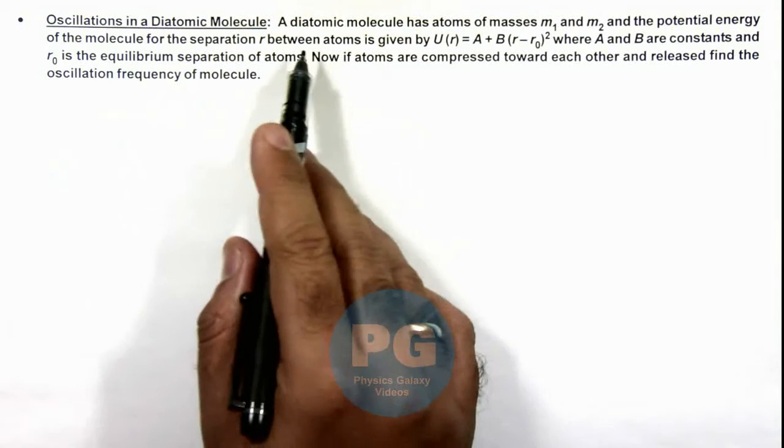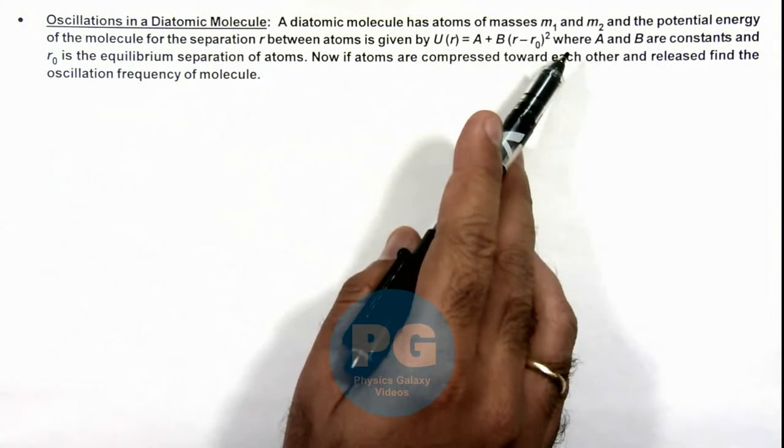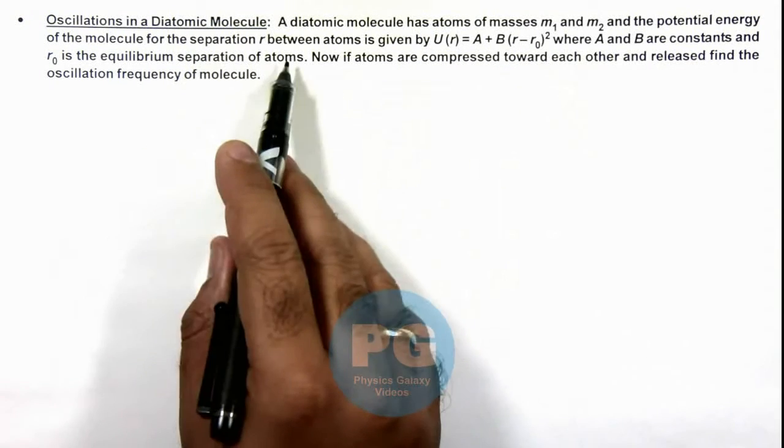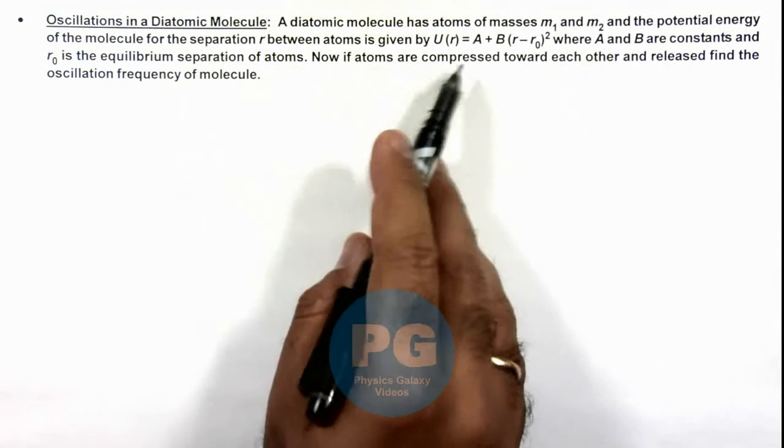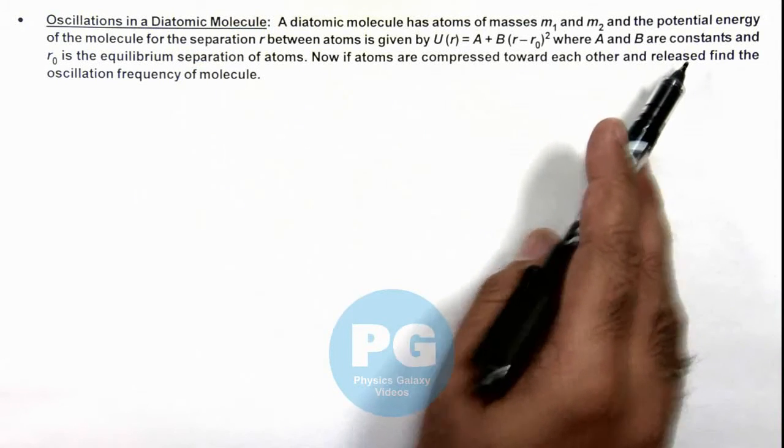Here we are given that a diatomic molecule has atoms of masses m1 and m2, and the potential energy between molecules at separation r between atoms is given by this expression. A and B are constants, and r₀ is the equilibrium separation of atoms.